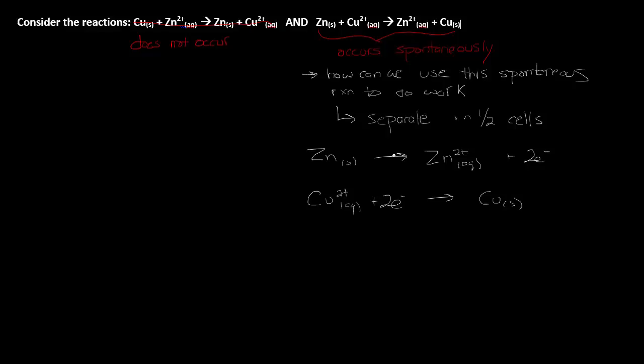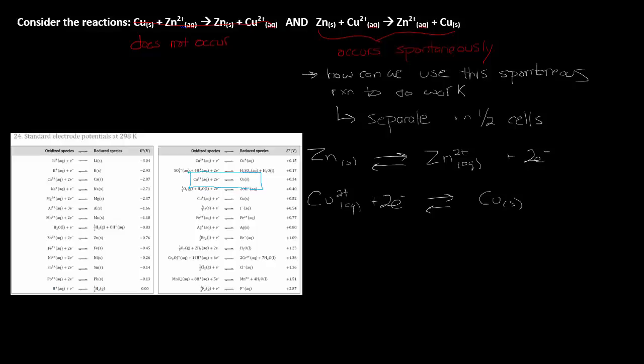These are the reactions that actually occur - the oxidation and reduction. You can find these in the standard electrode potentials tables. This is table 24 in the data booklet. You can find both of these processes, but you'll notice that they're both written as reductions because this table is often referred to as a standard reduction potential table.